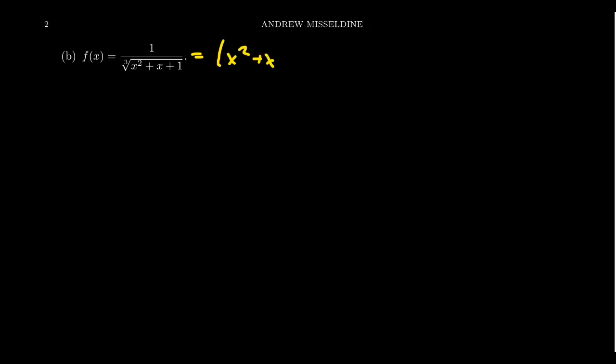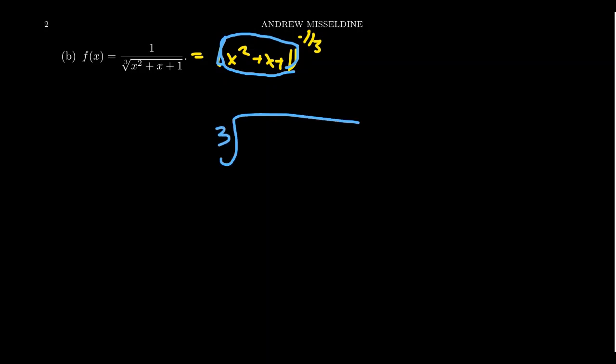Let's try this together. The best thing to observe before we start calculating the derivative is that I could write this as a power function — at least a composed power function. We have a cube root of something in the denominator and a 1 in the numerator. This tells me that keeping the quadratic x squared plus x plus 1, we could write this to the negative one-third power: one-third because we have the cube root, and negative because we're in the denominator. Using the negative one-third power lets us avoid the quotient rule, which is more cumbersome than the power rule here. The inner function is x squared plus x plus 1 — the function inside the radical — and the outer function is the negative one-third power.